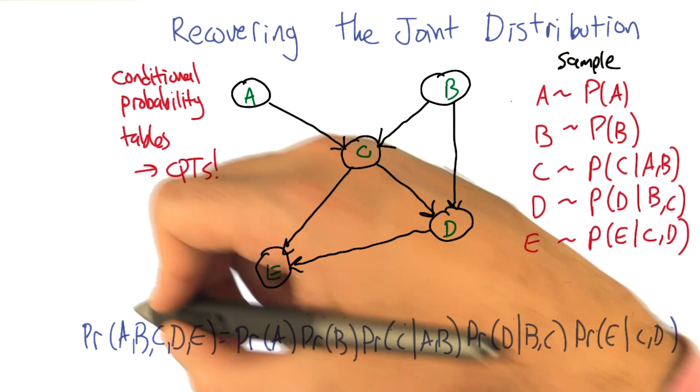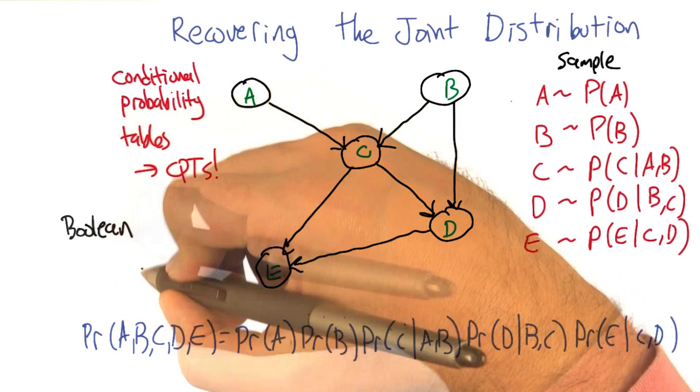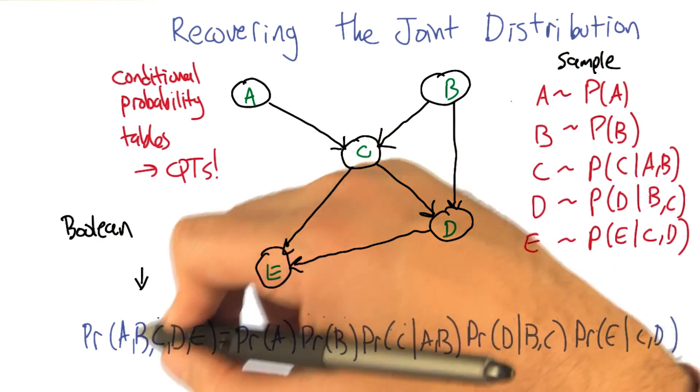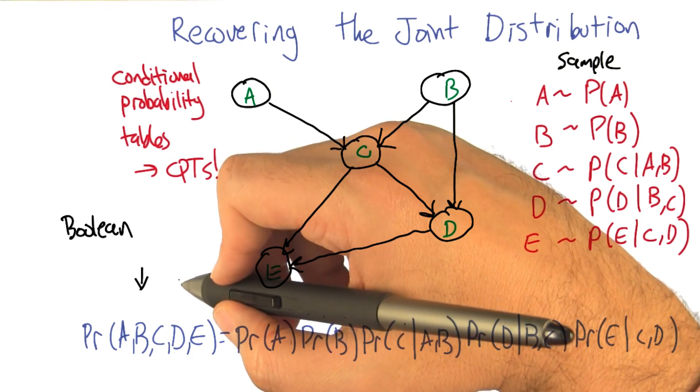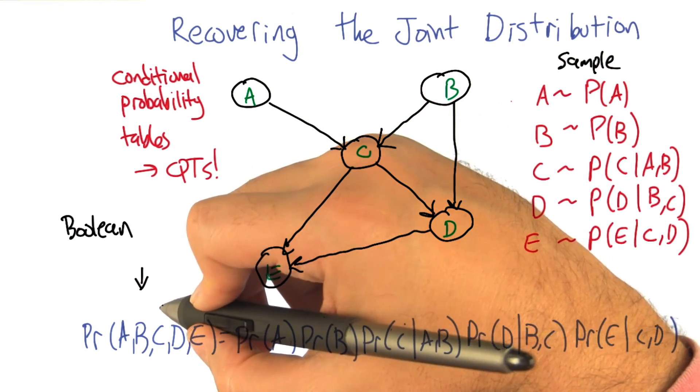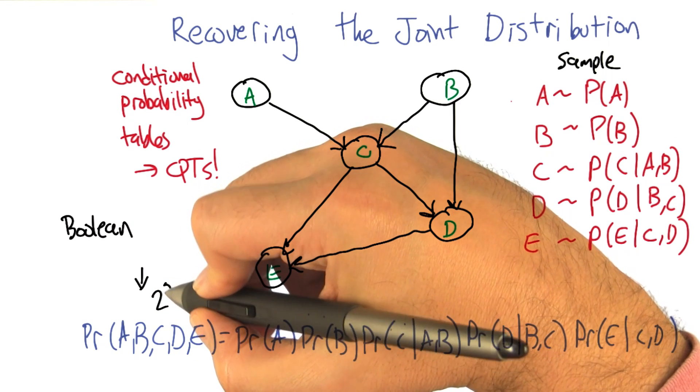So if these were Boolean variables, how many values would we need to specify for the joint distribution in the standard representation, where you just assign a probability to everything? Well, if I ignore the fact that there are some constraints we might be able to take advantage of, it would be two to the fifth, because there are five variables. Right.